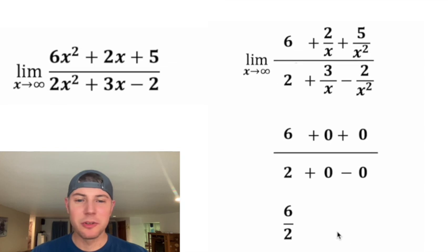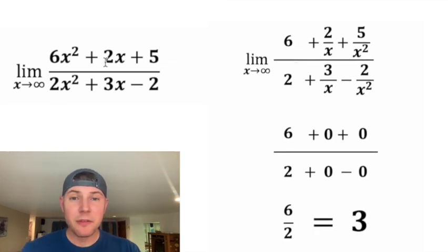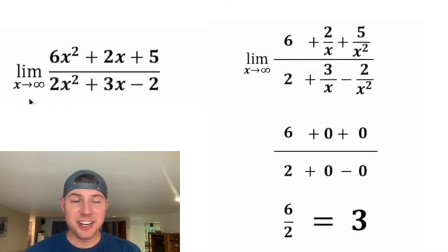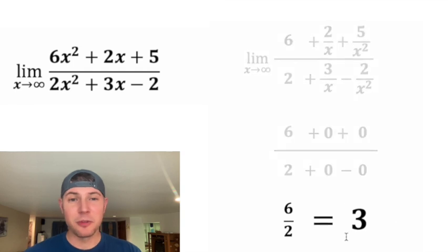And this will simplify to 6 over 2, which is equal to 3. So the limit of this polynomial over this polynomial as x approaches infinity is going to be equal to 3.